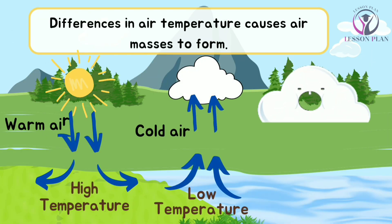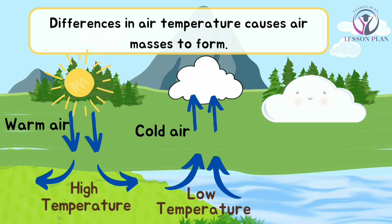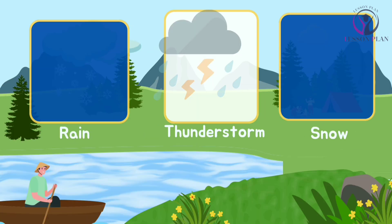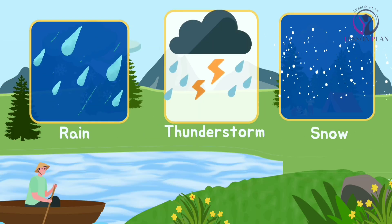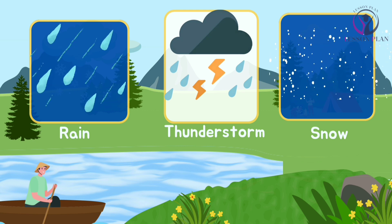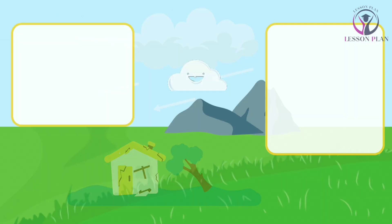For example, when a cold air mass meets a warm air mass, it can create a cold front. This can bring rain, thunderstorms, or even snow.